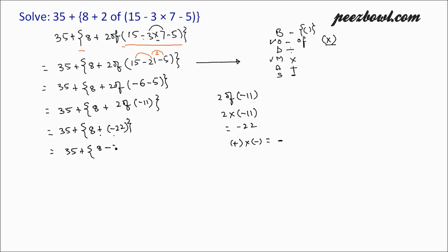So we have 8 minus 22, which equals minus 14. Same here — plus and minus multiplying together gives minus. So 35 minus 14 equals 21. This is the value of this arithmetic expression. So 35 plus in the curly bracket 8 plus 2 of in round bracket 15 minus 3 multiplied by 7 minus 5, has the value of 21. This is the answer.